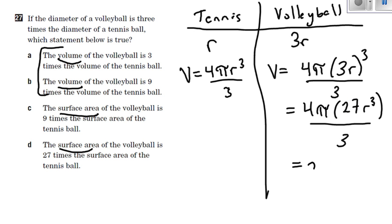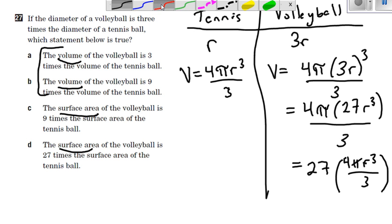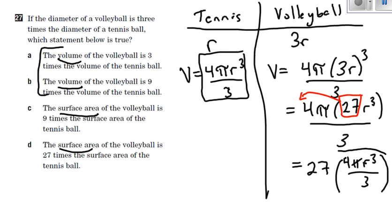If you look at what I have here compared to what I have here, the only difference is that 27. So I'm going to write that 27 out front. So 27 times 4 pi r cubed divided by 3. What I can see is that the volume of the tennis ball right here is exactly the same as I've written right here, which means the volleyball is 27 times bigger in volume than the tennis ball. So the volume of the volleyball is 3 times bigger? No, it's 27 times bigger. The volume of the volleyball is 9 times bigger? Nope, it's 27 times bigger.